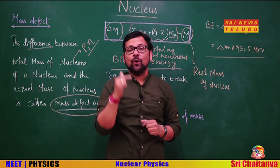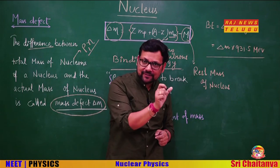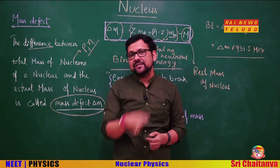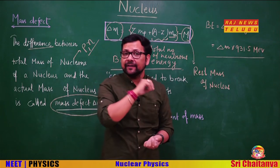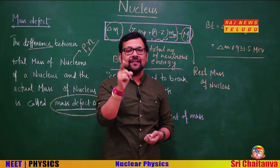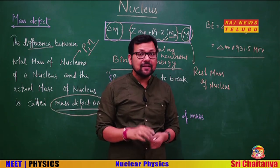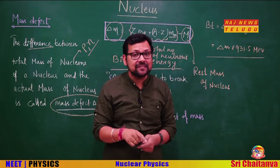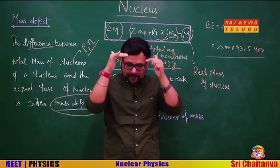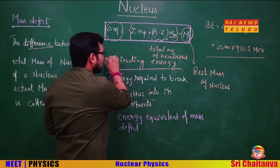So if a question asks what mass defect is, the answer is: it is the difference between the mass of the nucleons and the rest (observed) mass of the nucleus. The question is: where did that difference go? The answer lies in mass-energy equivalence — because the nucleus is a stable system, some energy must have been lost, and that lost energy is the binding energy.